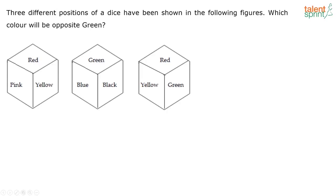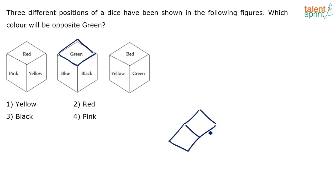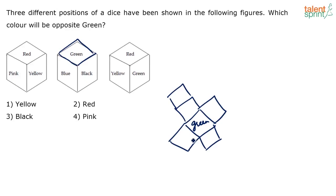Next problem: different positions of a dice are shown. Which color will be opposite to green? You have to find which color comes opposite green. Looking at the figures, face green will have 4 adjacent sides. When you open the cube, green has 4 adjacent sides and one opposite side.